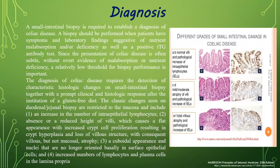A small intestinal biopsy is required to establish a diagnosis of celiac disease. A biopsy should be performed when patients have symptoms and laboratory findings suggestive of nutrient malabsorption or deficiency, as well as positive antibody tests. Since the presentation of celiac disease is often subtle without overt evidence of malabsorption, a relatively low threshold for biopsy performance is important. The diagnosis requires detection of characteristic histological changes on small intestinal biopsy together with a prompt clinical and histological response after institution of a gluten-free diet.